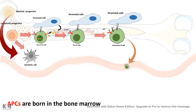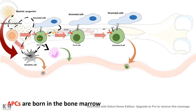The third type is the macrophage. Macrophages are not directly produced from the bone marrow — instead, the myeloid progenitor gives rise to monocytes. Monocytes are secreted into the bloodstream, and when they enter the tissue space they differentiate into macrophages. So now we understand how macrophages, dendritic cells, and B cells develop from the bone marrow.